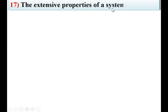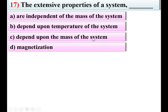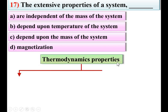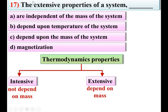Next: the extensive properties of a system — options: are independent of mass, depend on temperature, depend on mass, magnetization. Thermodynamic properties are classified as intensive and extensive. Intensive properties do not depend on mass; extensive properties depend on mass. So extensive properties depend upon the mass of the system — C is the right answer.